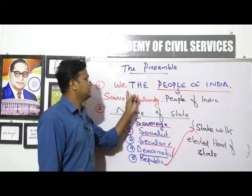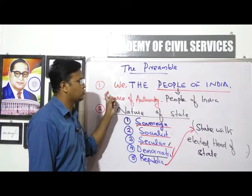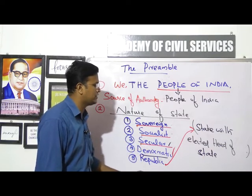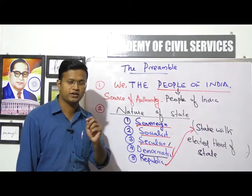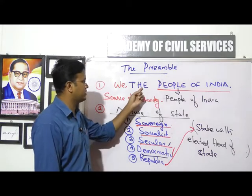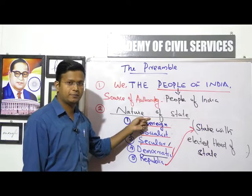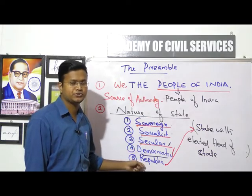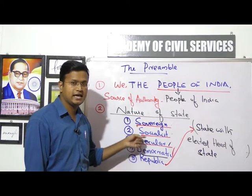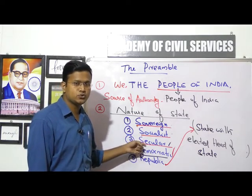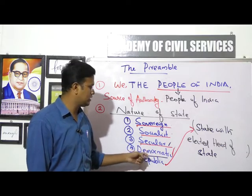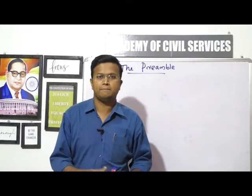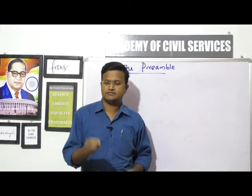To summarize: the Preamble states that 'We, the People of India, solemnly resolve to constitute India into a Sovereign, Socialist, Secular, Democratic Republic.' The first point is that the source of authority is the people; the second is that India has five basic natures — sovereign, socialist, secular, democratic, and republic.